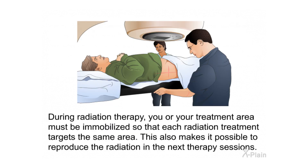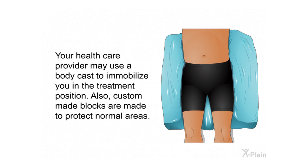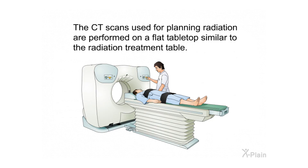During radiation therapy, you or your treatment area must be immobilized so that each radiation treatment targets the same area. This also makes it possible to reproduce the radiation in the next therapy sessions. Your health care provider may use a body cast to immobilize you in the treatment position. Custom-made blocks are also made to protect normal areas. The CT scans used for planning radiation are performed on a flat tabletop similar to the radiation treatment table.